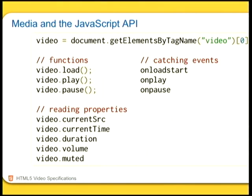Now we've done the basics of markup, we'll go to the JavaScript API. The media element has a really nice JavaScript API. Some plugins available for Flash and HTML5 re-implement these APIs for the Flash player as well, so you can use the same API no matter whether you've got Flash or HTML5 video. We've got functions like load, play, and pause. These create events: onloadstart, onplay, onpause. There's a whole bunch more events thrown as the video progresses, including an onprogress event. Whatever you want to do with the video, there's always an event you can attach your functions to.